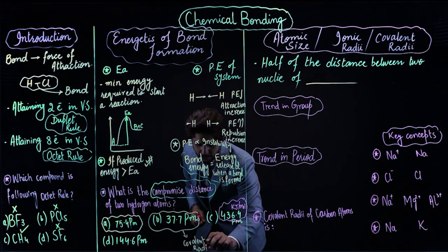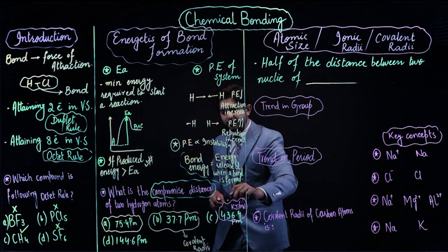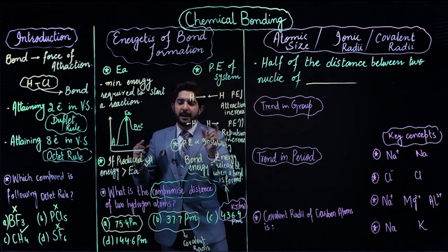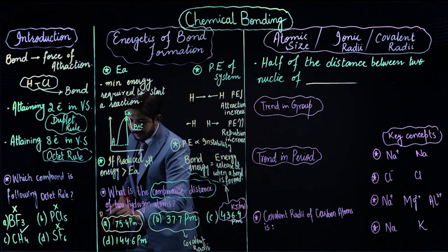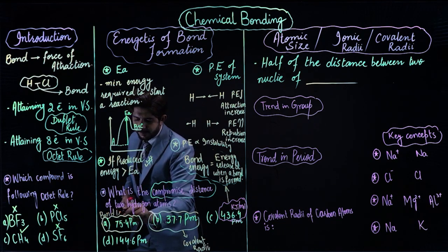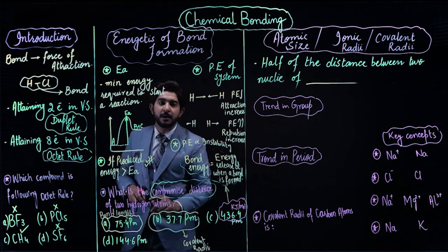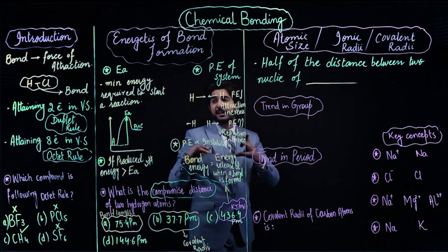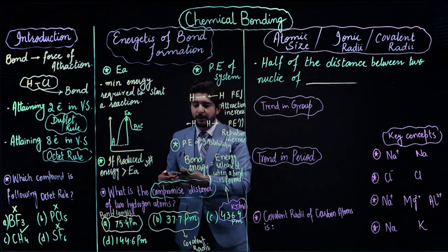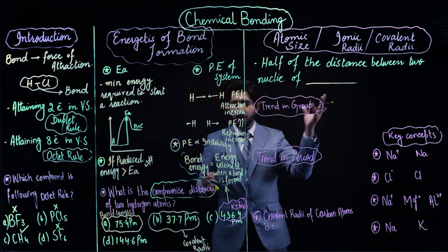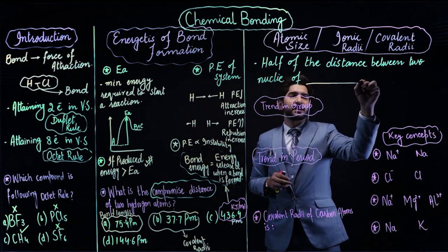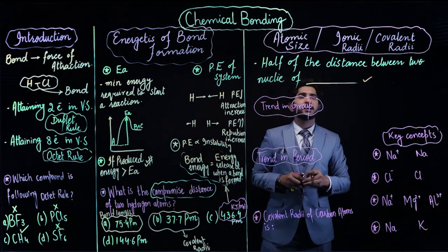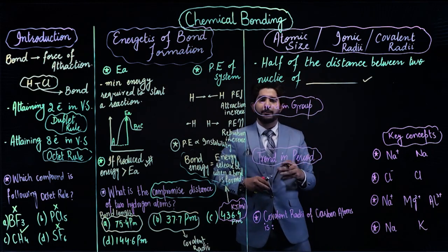So we have related bond energy, bond length, and covalent radii here — covalent radius is the half of the bond length distance. These are the definitions of atomic radius, ionic radius, and covalent radius.